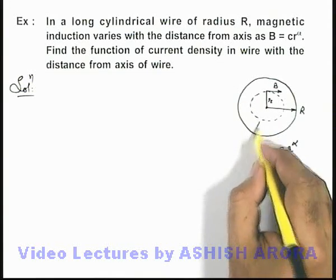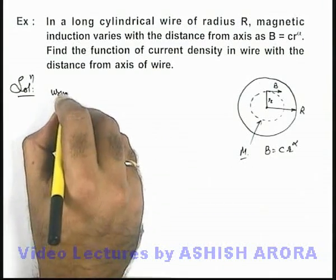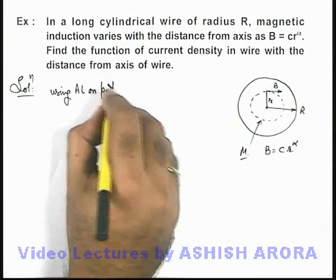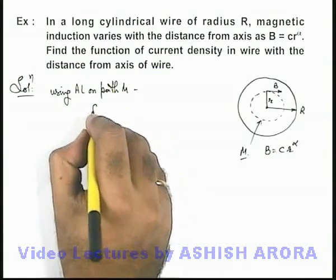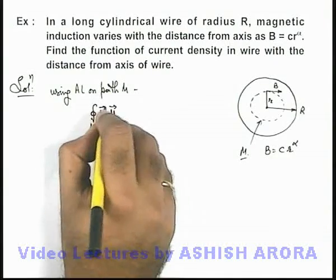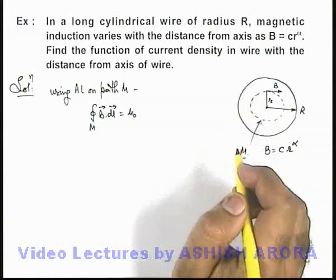For this path, if we name it as M, we can say using Ampère's law on path M, we can write: integration for the closed path M of B·dl is equal to μ₀ multiplied by the current enclosed by the closed path.